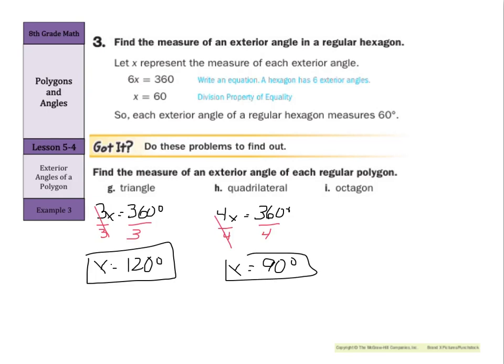Cool shortcut here, by the way. If you think about 36 divided by 3, you get 12. Put on your zero. 36 divided by 4, you get 9. And tack on your zero. Kind of cool.